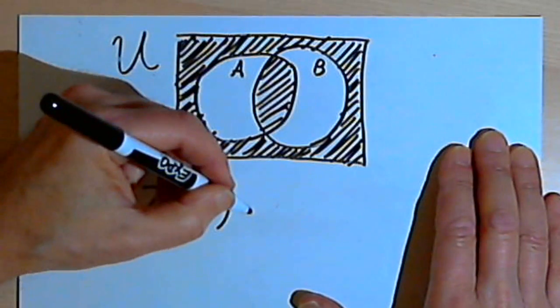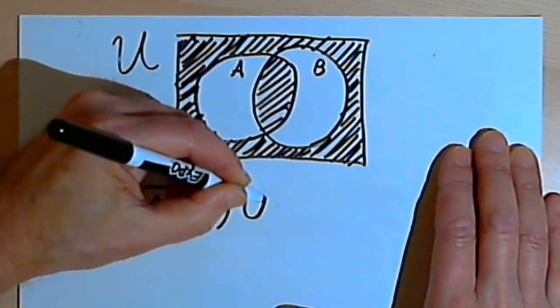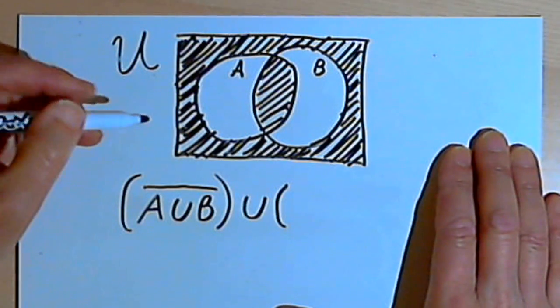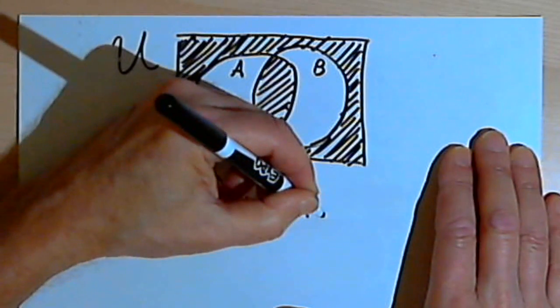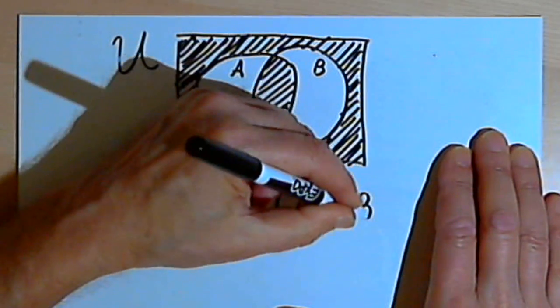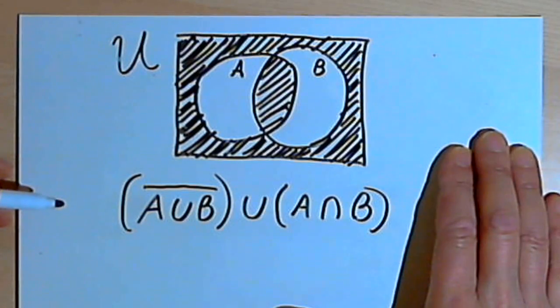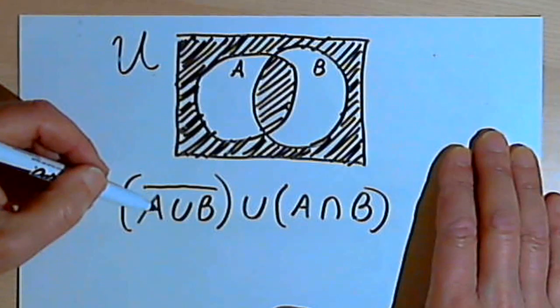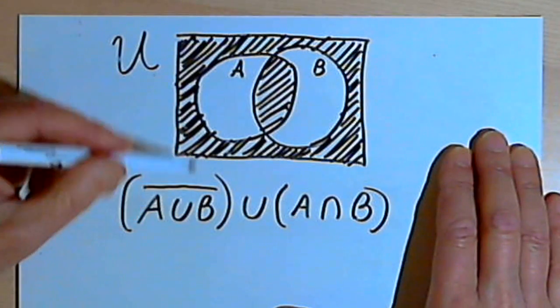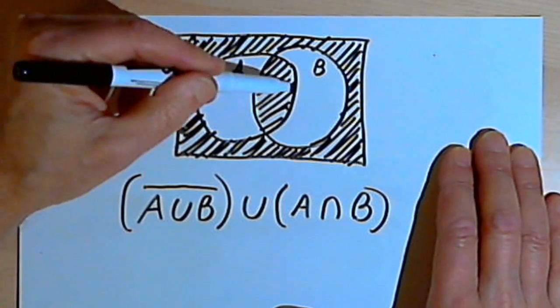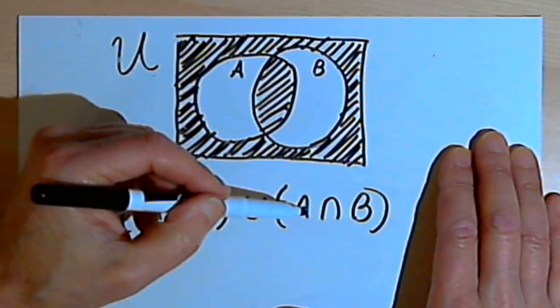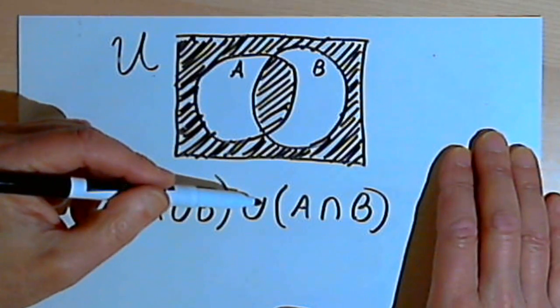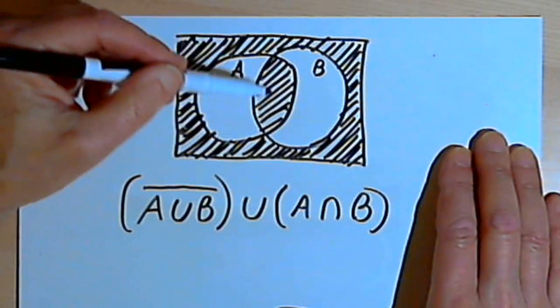Then I also want to shade in the overlap between A and B. Okay, so since I also want that, I'll put in a union sign. And then for my second set of parentheses, I'm going to have A intersect B. Okay, so I'm getting the area outside the circles by using a complement of A union B. I'm getting the overlap between the two circles by using the intersection of A and B. And I'm putting the union sign between those two so I get both of those areas.